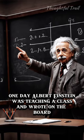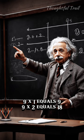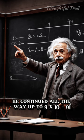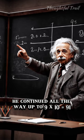One day Albert Einstein was teaching a class and wrote on the board 9x1 equals 9, 9x2 equals 18, and he continued all the way up to 9x10 equals 91.